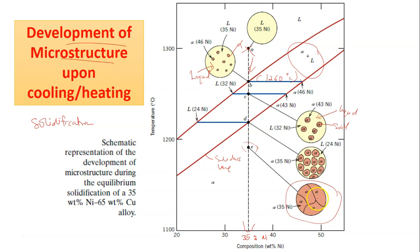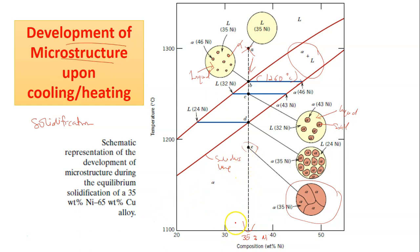There will be no more liquid — it will be completely solid. The final product is what we call a polycrystalline alpha phase solid solution, which has a uniform composition of 35 weight percent nickel and 65 weight percent copper. Subsequent cooling will produce no microstructural or compositional changes.